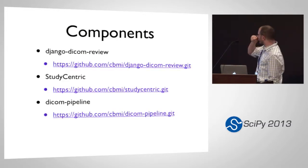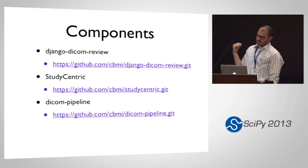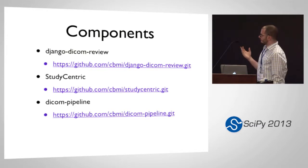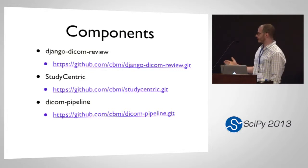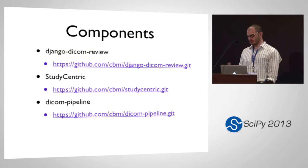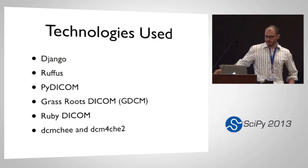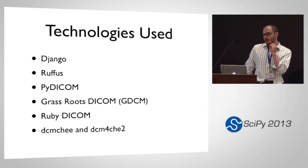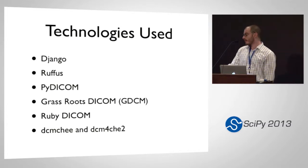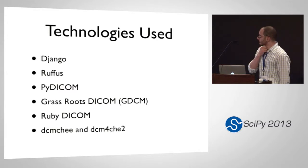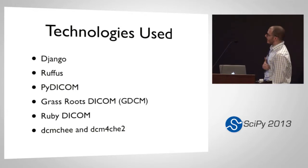The solution we have — all available online — is basically three parts. There's a Django app for review, and there is an app called StudyCentric, which is a DICOM viewer in the browser. The front-end client is just JavaScript; the back end uses Django and the Grassroots DICOM library with Python bindings to query PACS. And finally there's a DICOM pipeline, which is a Rufus pipeline, used to take care of the anonymization after all the review has been done. The technologies we use are Django, Rufus, PyDICOM — a great DICOM library if you need to do any kind of work with DICOM in Python — and Grassroots DICOM, which is important for DICOM network communications. PyDICOM does not support that, so if you need to query a PACS, you need Grassroots DICOM.